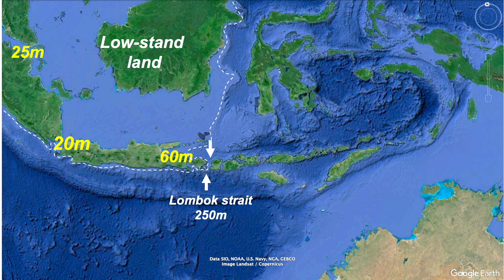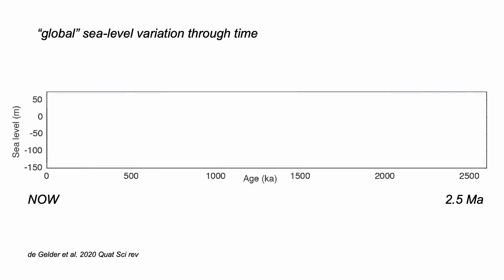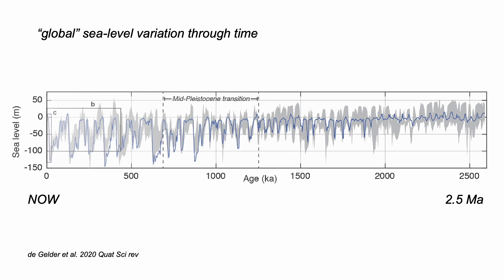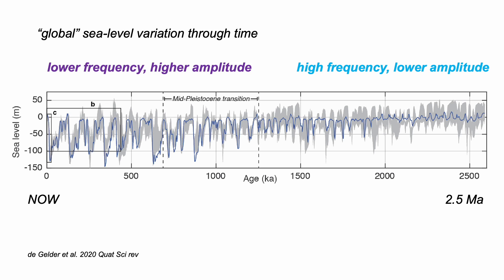So how has sea level changed globally? This is for the past 2.5 million years, covering the Quaternary, and it's a spiky signal. To start with, the fluctuations happen quickly but are not very extreme. But since the mid-Pleistocene, the signal is different, with fewer fluctuations but much deeper.